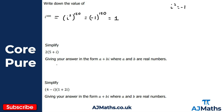For the next practice question, we're expanding a single bracket with a number on the outside. We do two times five, giving ten, and two times positive i, giving plus two i. We have it in the correct format — happy days.